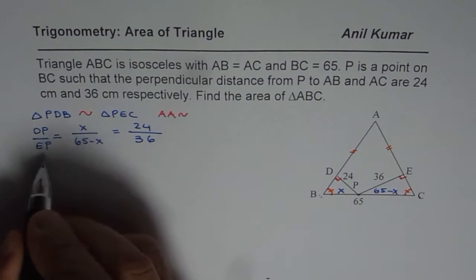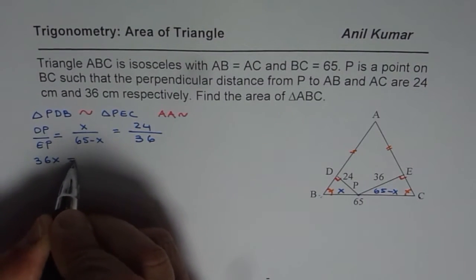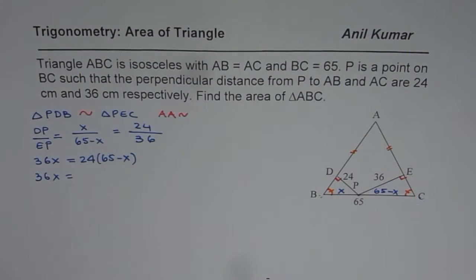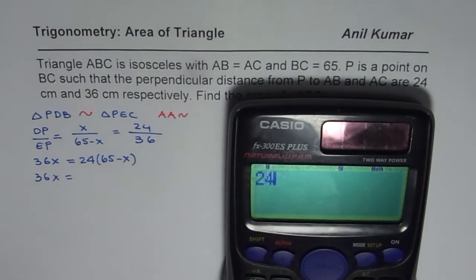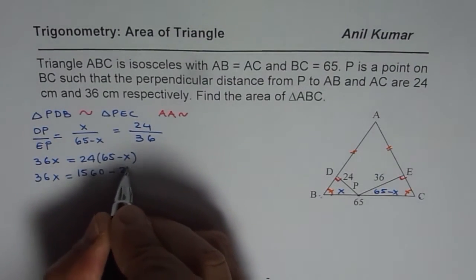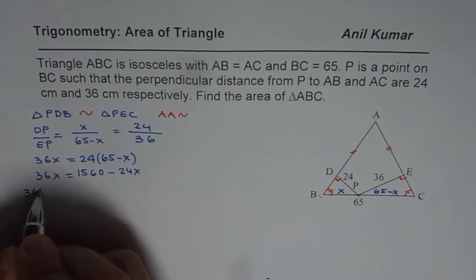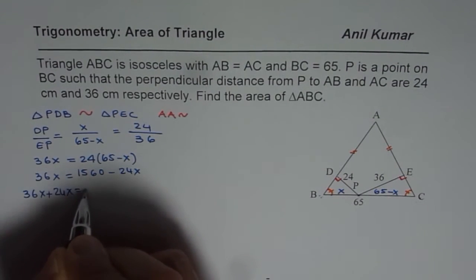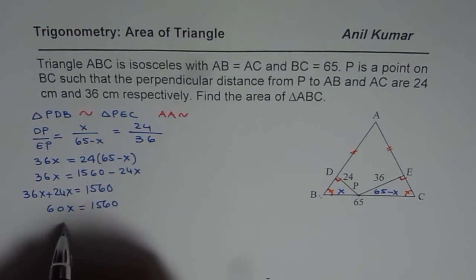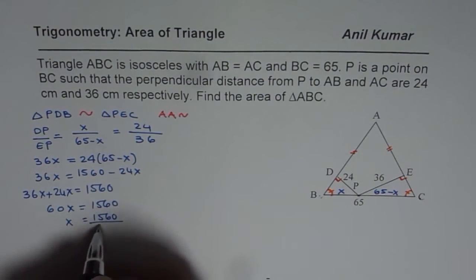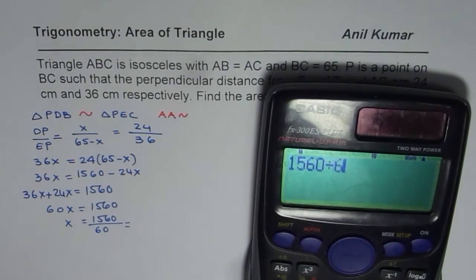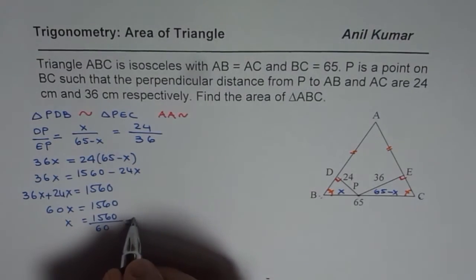We will cross multiply and solve. So we get 36X equals 24 times (65 minus X). That gives us 36X equals 1560 minus 24X. Bringing them together: 36X plus 24X equals 1560, so 60X equals 1560, and X equals 1560 divided by 60, which equals 26.